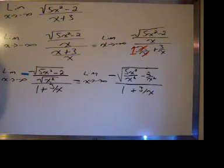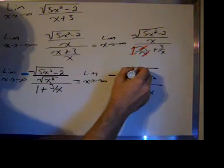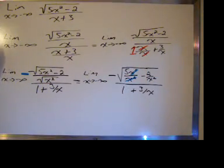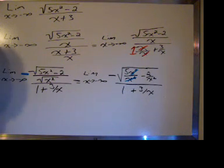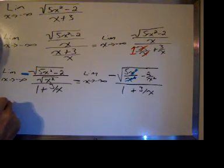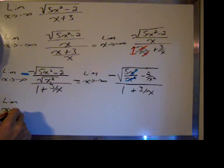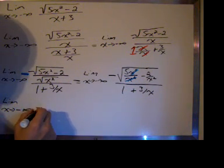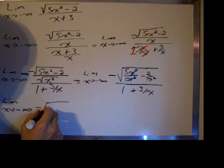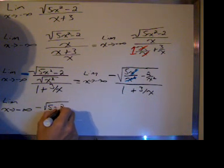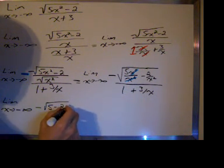Do a little canceling. x squared over x squared is, of course, 1, so we have a 5 left. So now, I'll re-copy it. The limit as x approaches negative infinity of negative square root of 5 minus 2 over x squared, divided by 1 plus 3 over x.